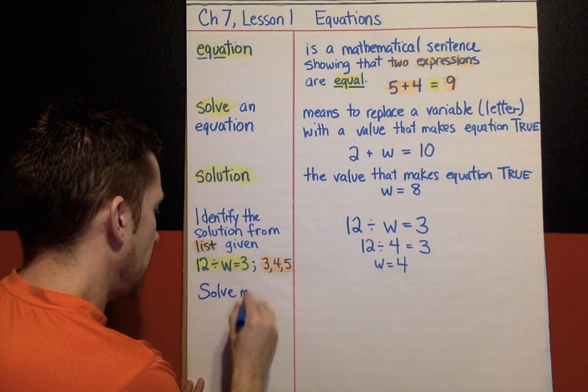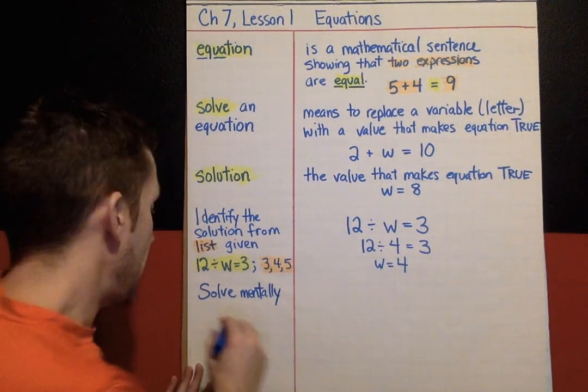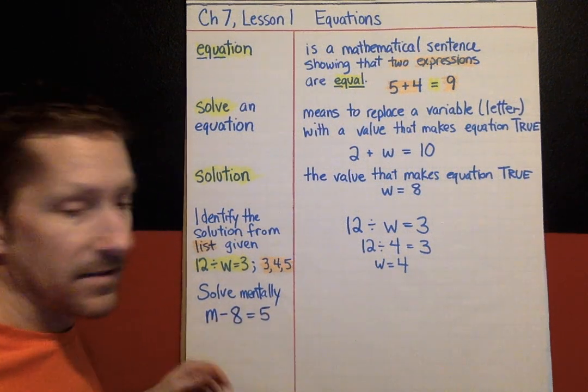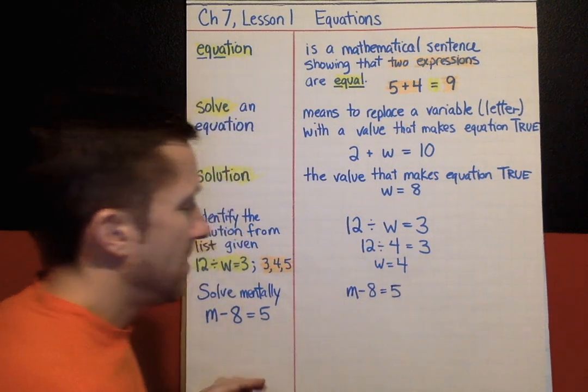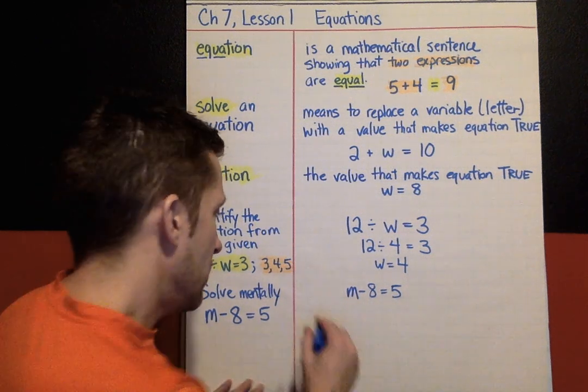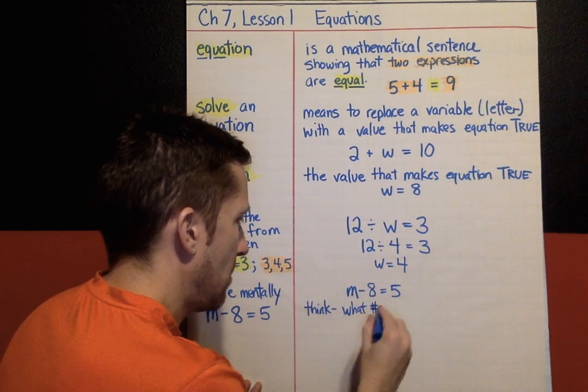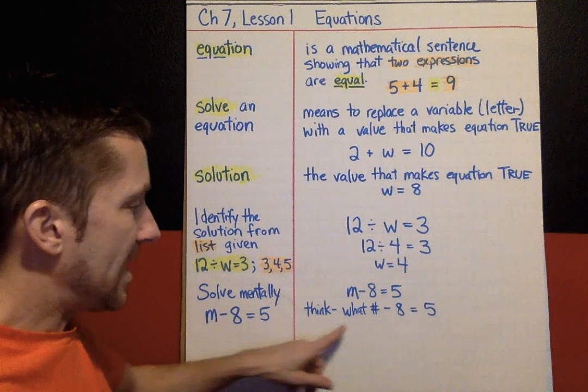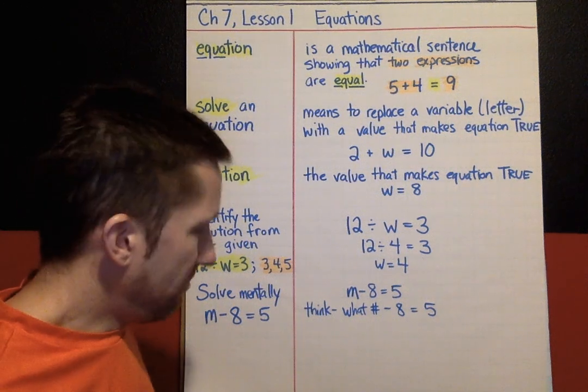Solve these equations mentally. How do we do that? Here's one example. M minus 8 equals 5. I'm going to write M minus 8 equals 5. To solve this mentally, here's what you should be thinking. What number minus 8 equals 5? That's the thinking that you have to do to solve this mentally. And then you can try different numbers.